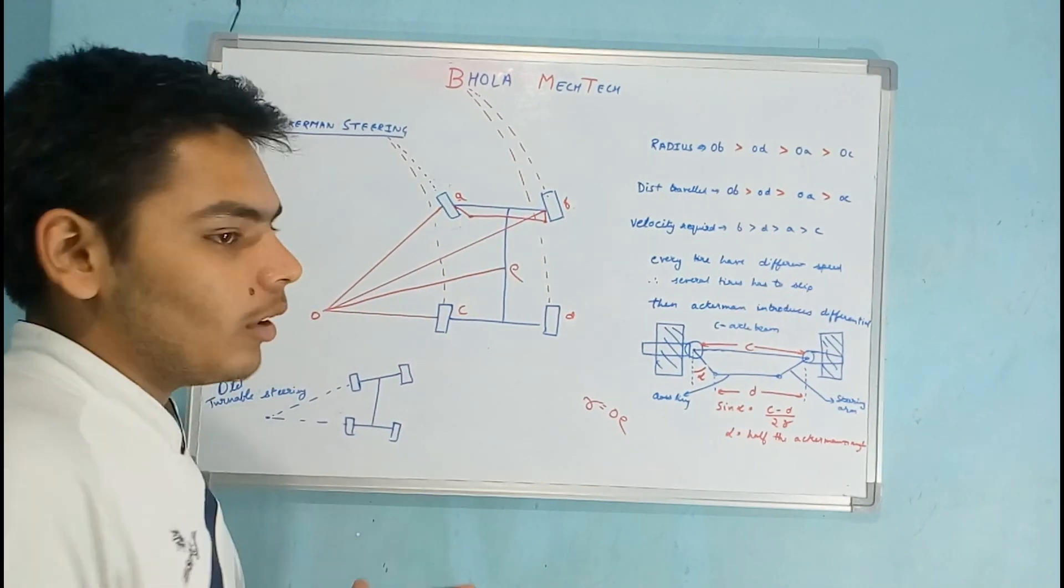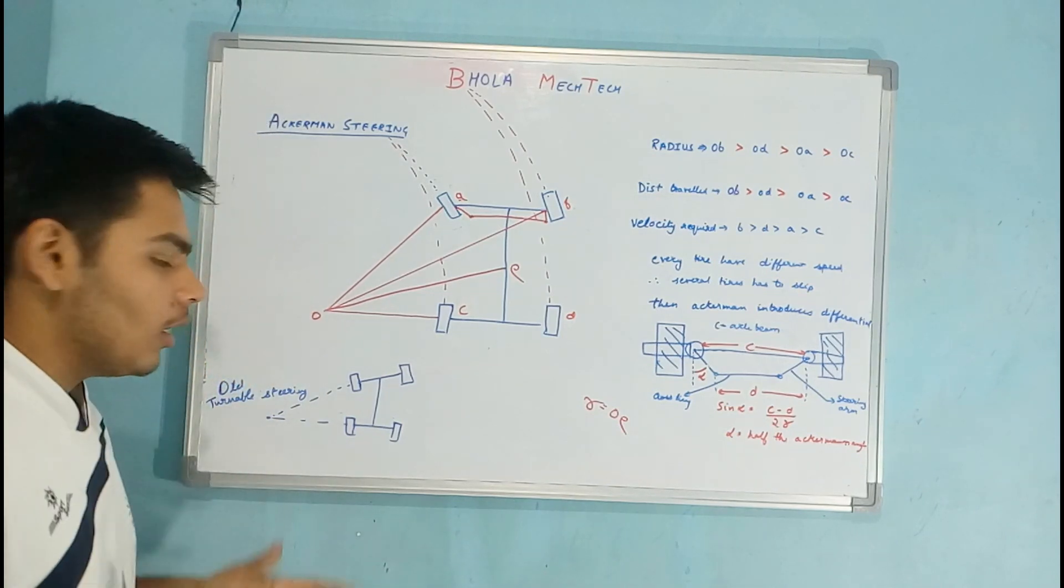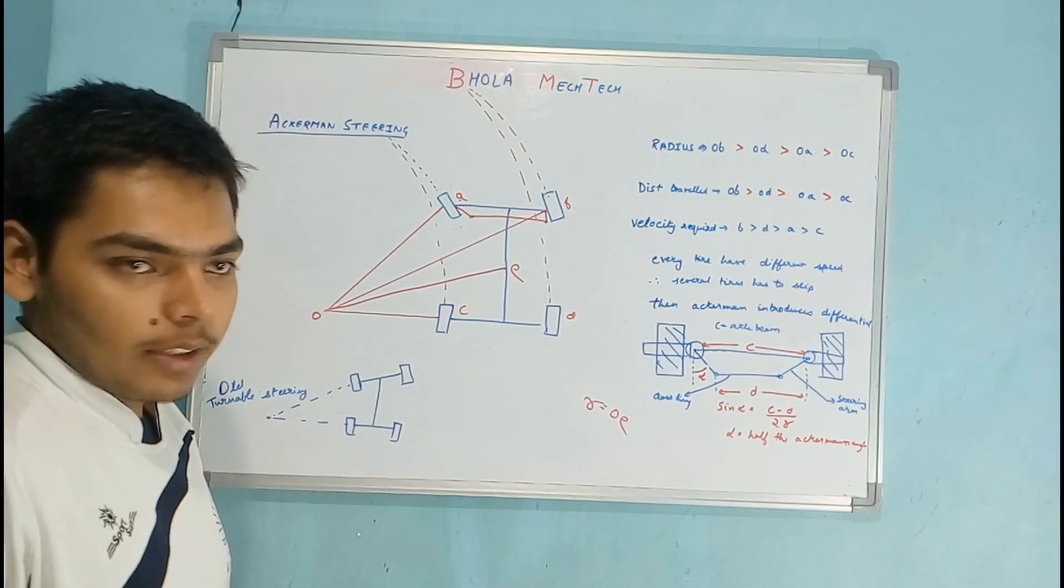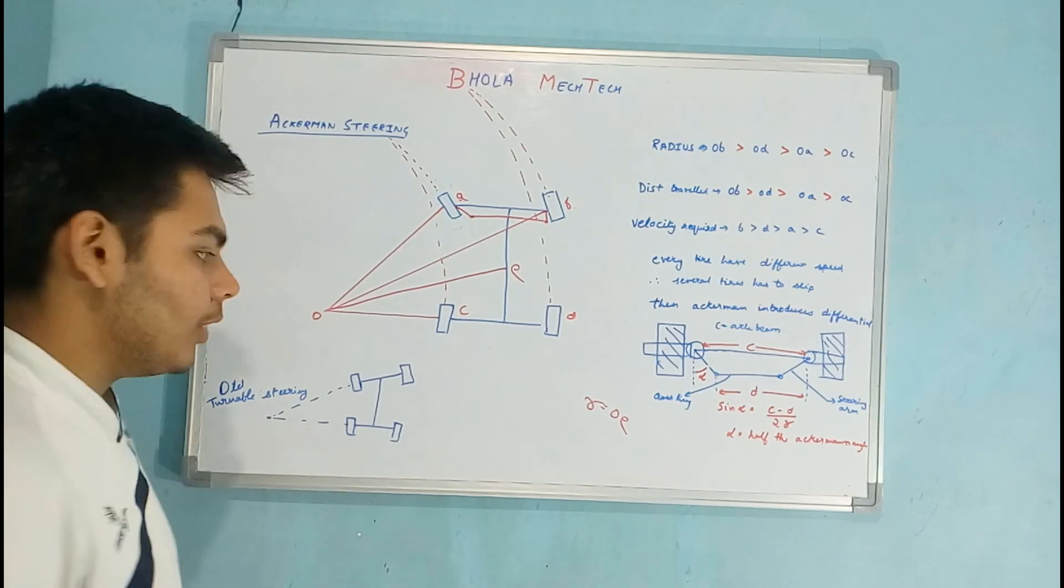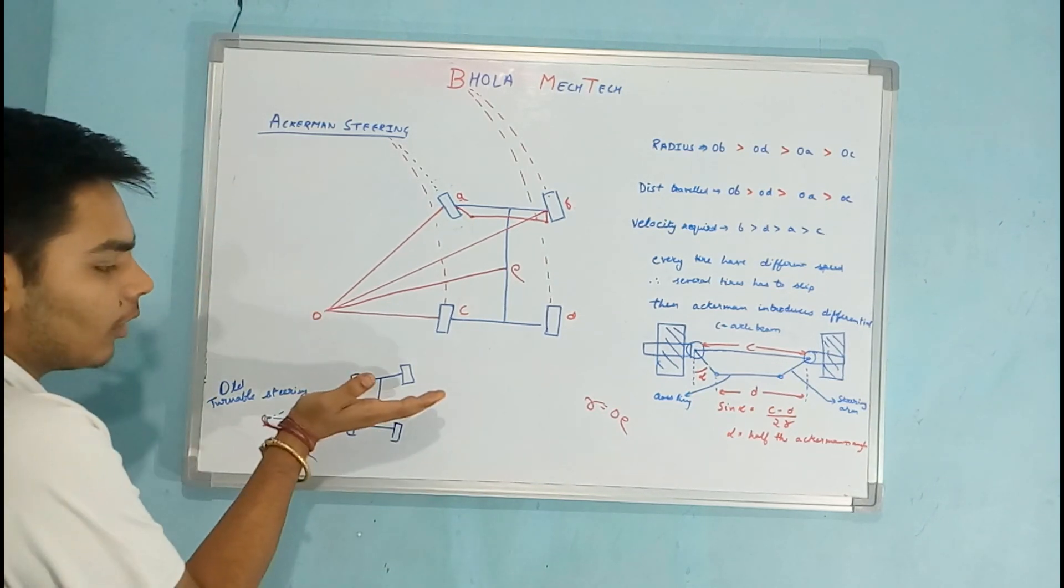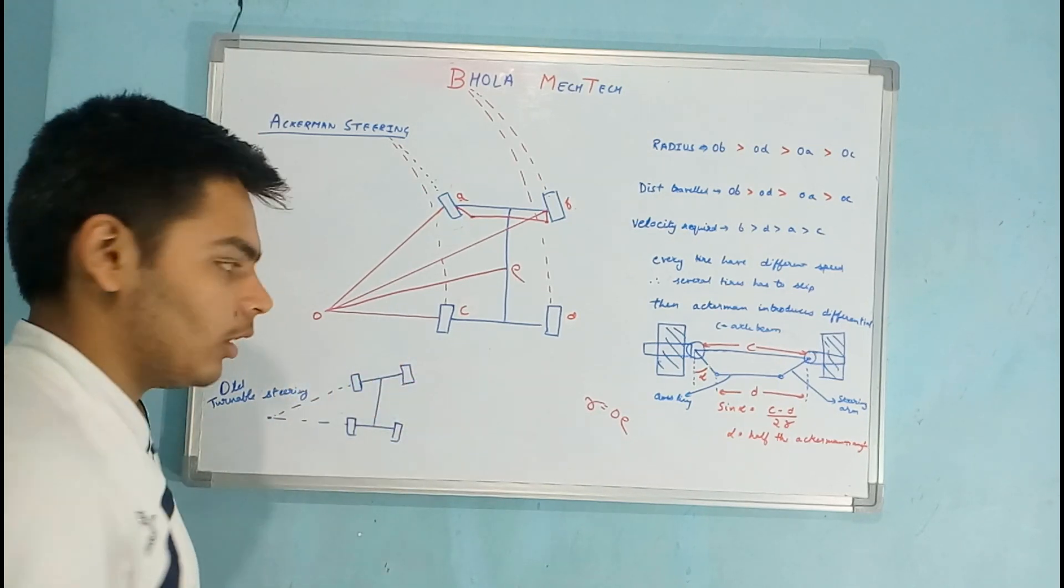So first of all, at the old times and early times in chariots and in buggies, the turnable steering system was used in which the front axle has to be completely tilted so as to turn the chariot. The front axle is pivoted at a single point.